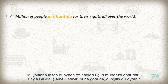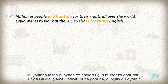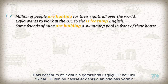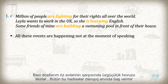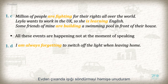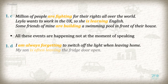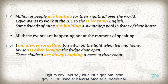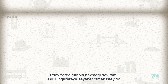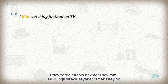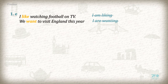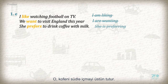1C — actions happening generally, not necessarily at the moment of speaking: 'Millions of people are fighting for their rights all over the world.' 'Leila wants to work in the UK, so she is learning English.' 'Some friends of mine are building a swimming pool in front of their house.' 1D — repeated actions: 'I am always forgetting to switch off the light when leaving home.' 'My son is often leaving the fridge door open.' 'These children are always making a mess in their room.' 1E — we never use the Present Continuous for non-active verbs: 'I like watching football on TV' (not 'I am liking'). 'We want to visit England this year' (not 'we are wanting'). 'She prefers to drink coffee with milk' (not 'she is preferring').